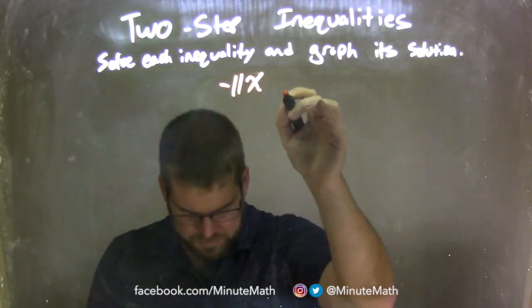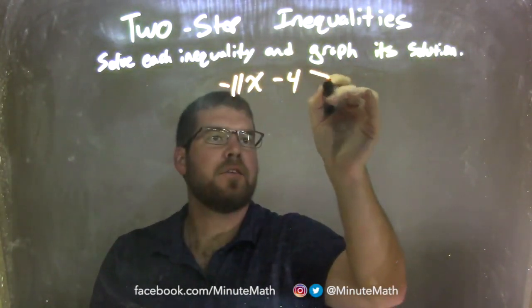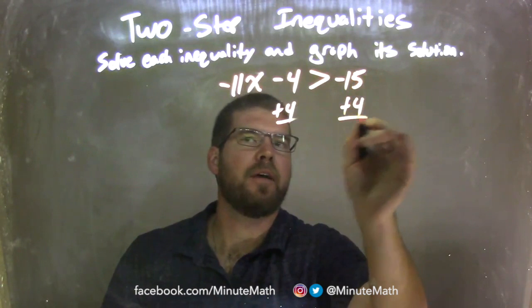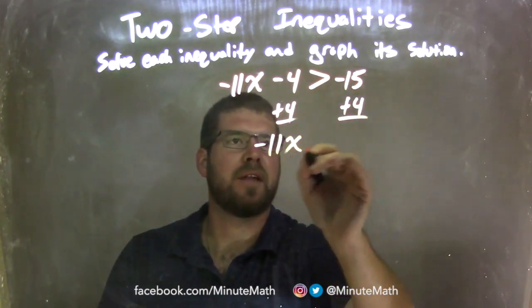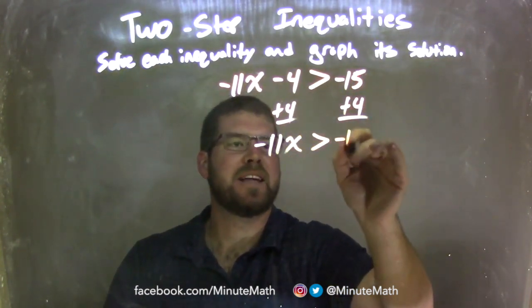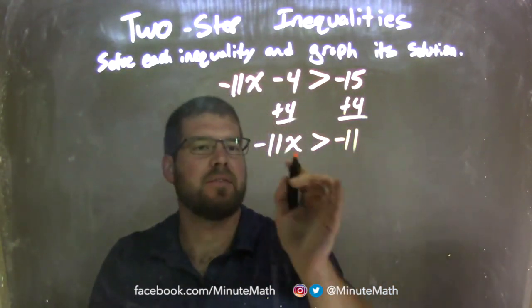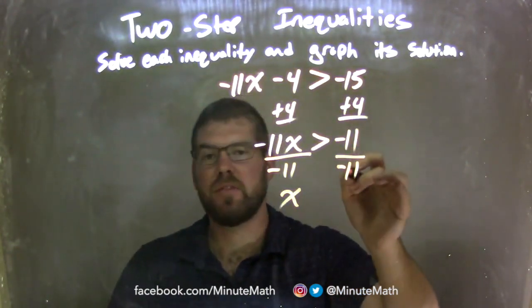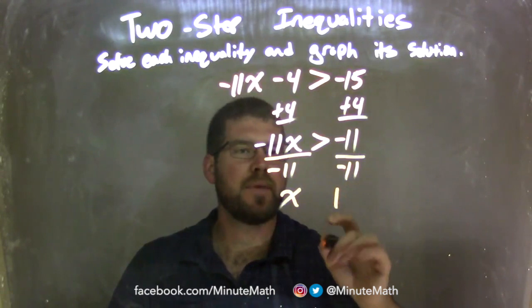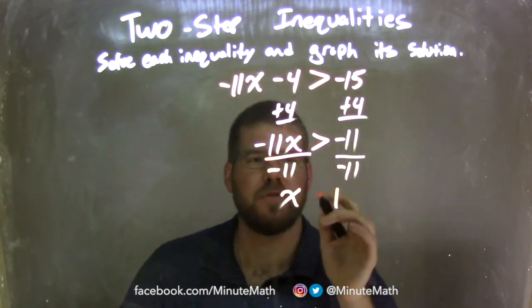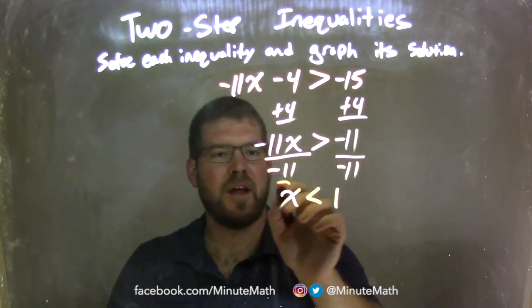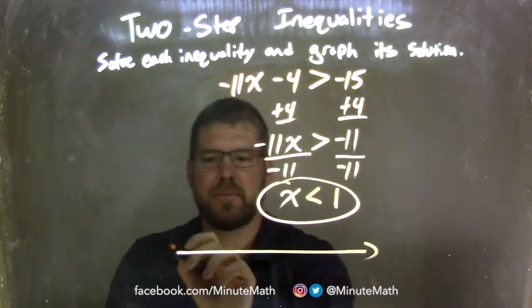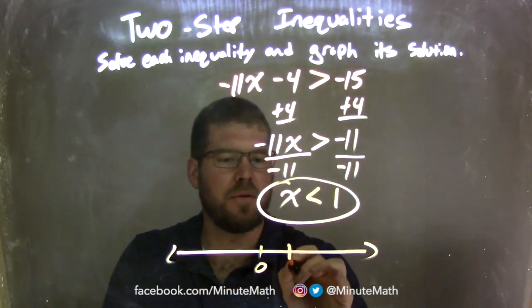Negative 11x minus 4 is greater than negative 15. First step: add 4 to both sides, leaving negative 11x is greater than negative 15 plus 4, which is negative 11. Now I divide both sides by negative 11 — that gives me positive x on the left, and negative 11 divided by negative 11 is positive 1. Since I divided by a negative over the inequality, that greater than sign turns into a less than sign. x is isolated, and it's less than positive 1.